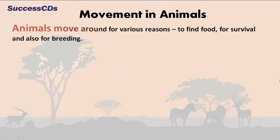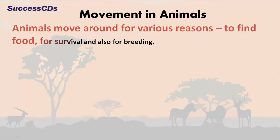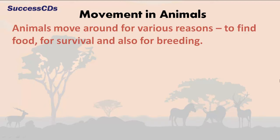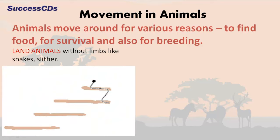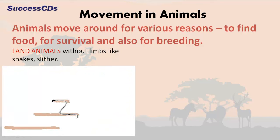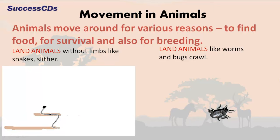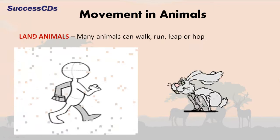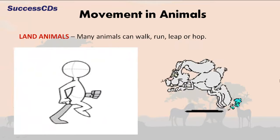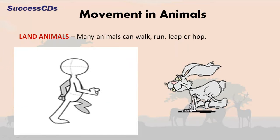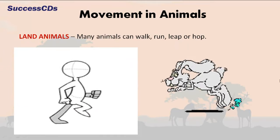Animals move around for various reasons: to find food, for survival and also for breeding. Land animals without limbs like snakes slither, whereas land animals like worms and bugs crawl. Many land animals can walk, run, leap or hop.